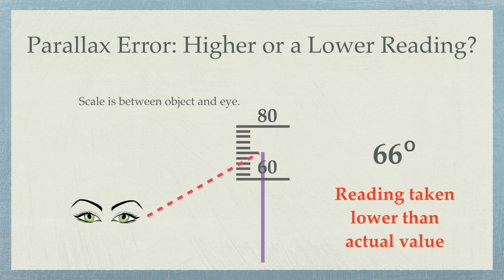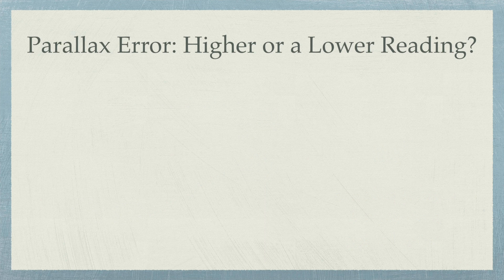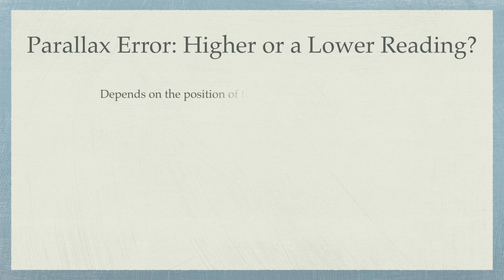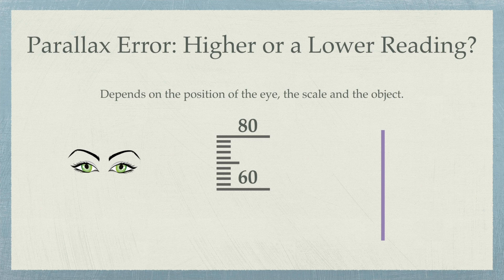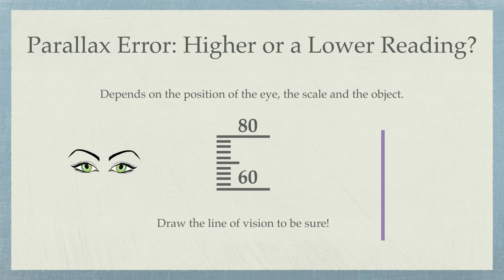Whether parallax error results in a higher or a lower reading depends on the position of the eye, the scale, and the object. To get the right answer, you need to draw the line of vision to be sure if you're getting a higher or a lower reading.